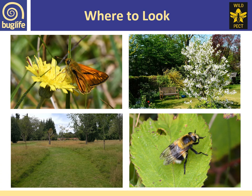So where should we look for insects? Well, looking on flowers is a really good place to start, as lots of our pollinating insects like to visit flowers to find food both for themselves and their offspring. So this lovely orange butterfly on the top left, called a large skipper, is getting nectar from this yellow flower. The flowers on trees can be really good to look at too.